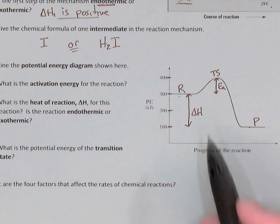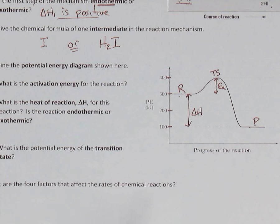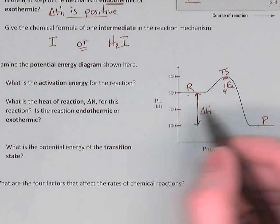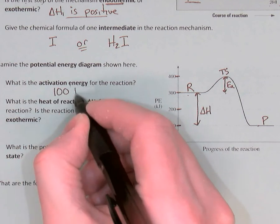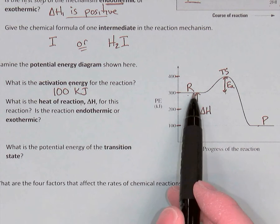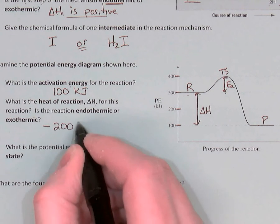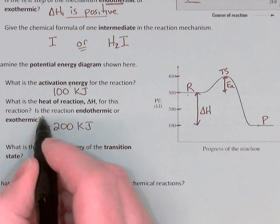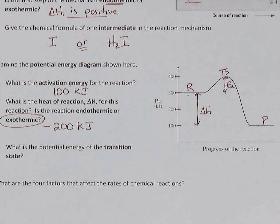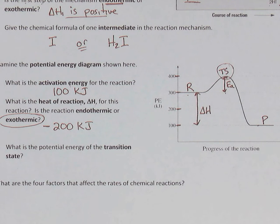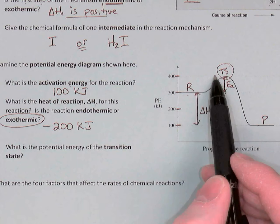Now that everything is labeled, answering these questions is straightforward. The activation energy started at 300 and went up to 400, so EA equals 100 kilojoules. Delta H started at 300 and dropped to 100, so it is negative 200 kilojoules. Because it's negative, it's an exothermic process — it's producing heat. If you were holding this in a test tube, you'd feel it get hot. The potential energy of the transition state is simply 400 kilojoules.